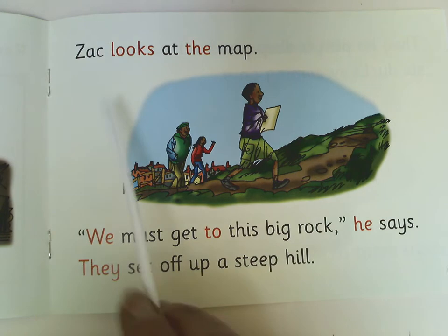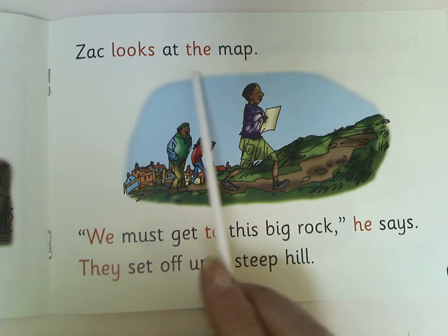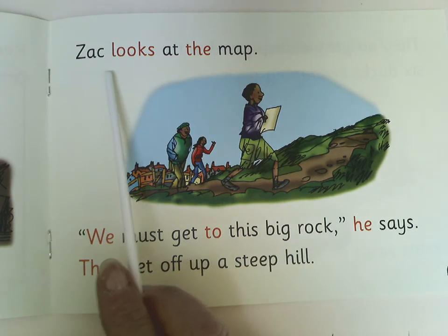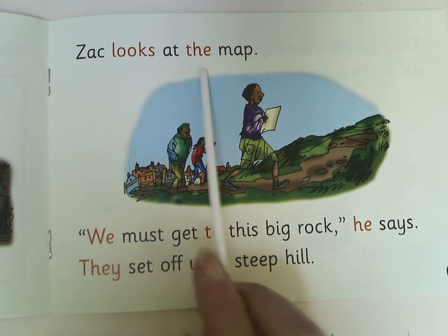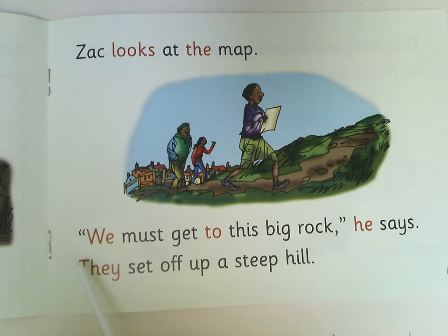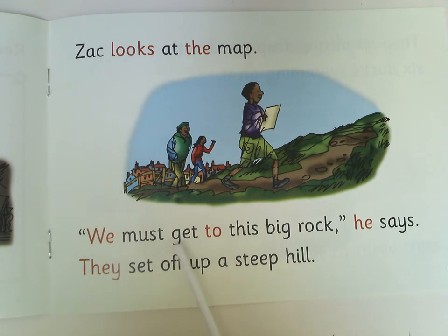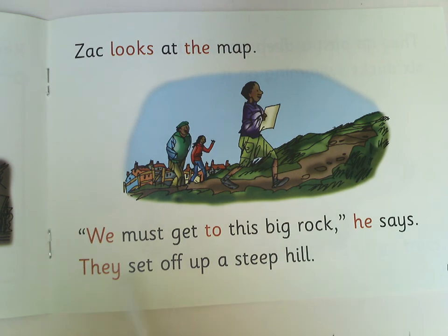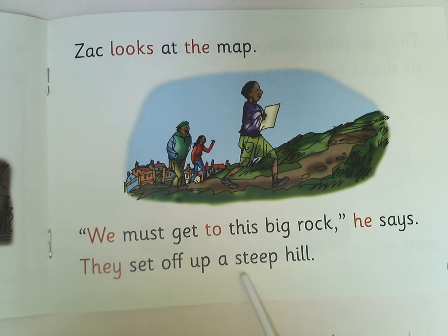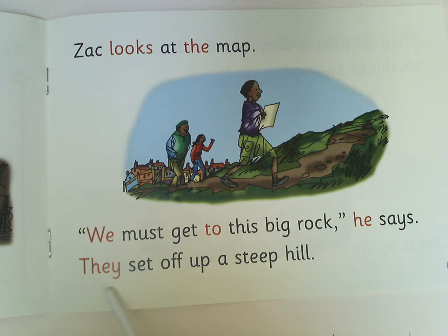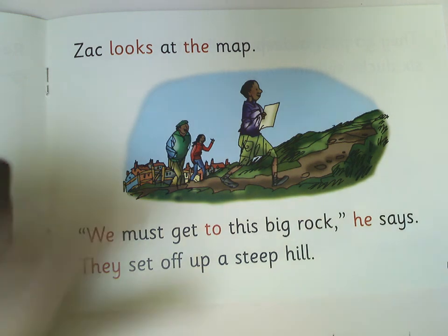My go. Zach looks at the map. Your go. Good. My turn. We must get to this big rock, he says. Your go. Well done. Brilliant. My turn. They set off up a steep hill. Your go. Brilliant.